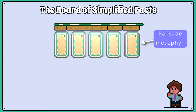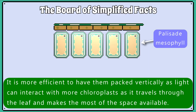They are found in the upper layers of the leaf because they are more exposed to light, and it is more efficient to have them packed vertically as light can interact with more chloroplasts as it travels through the leaf and makes the most of the space available.